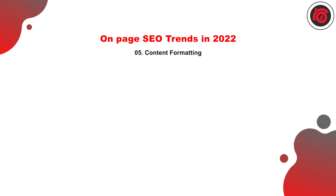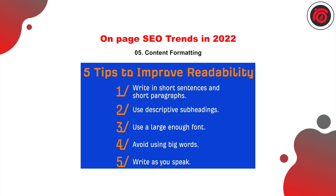You need to focus on readability and content formatting. Five short steps: write short sentences and short paragraphs, use descriptive subheadings, use a large enough font, avoid using big words, and write as you speak. The fifth point is very important because you need to make sure that your content is naturally flowing and does not sound like you are writing for bots. Rather, your purpose should be to write for the users.